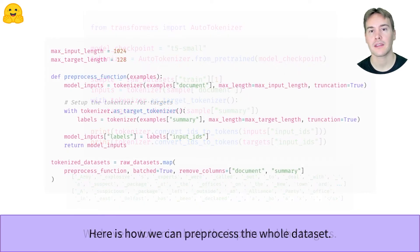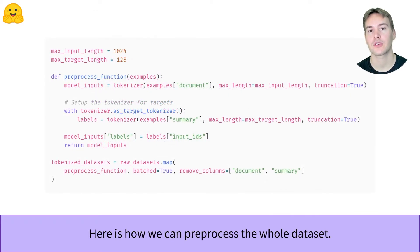Processing the whole dataset is then super easy with the map function. Since the summaries are usually much shorter than the documents, you should definitely pick different maximum lengths for the inputs and targets. You can choose to pad at this stage to that maximum length by setting padding equal to max length. Here we'll show you how to pad dynamically, as it requires one more step.